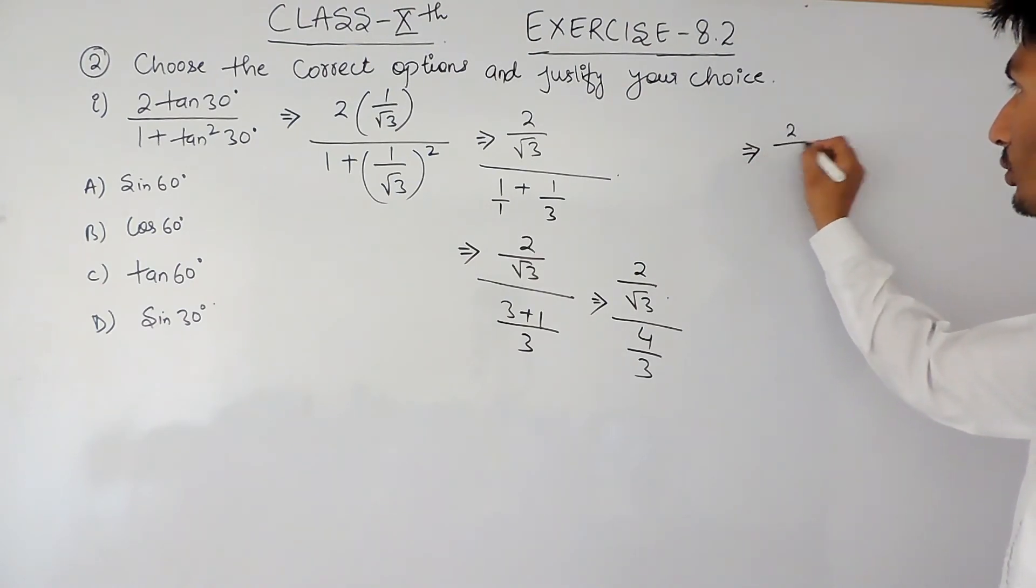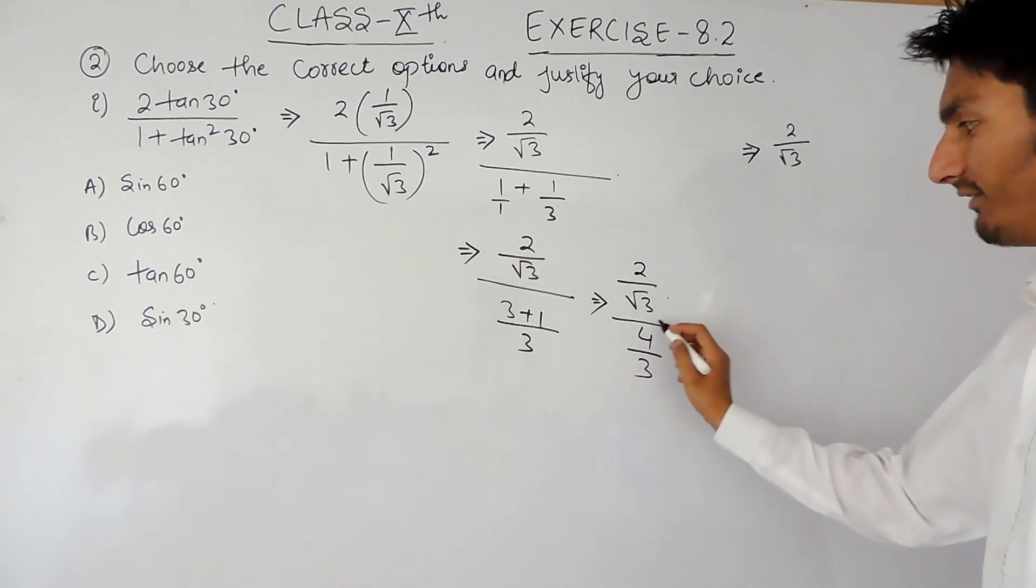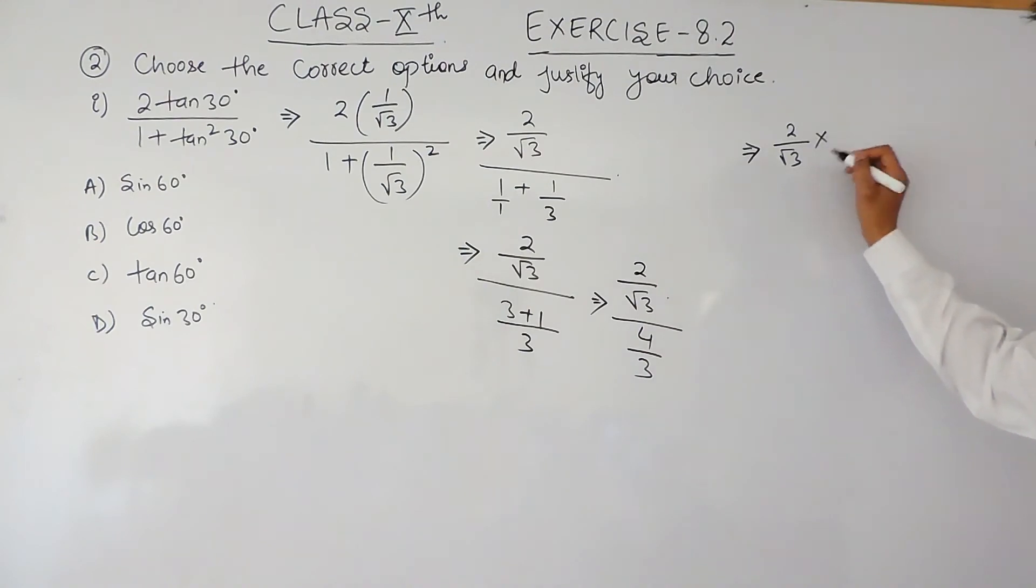Solving this expression further, it will be (2/√3) divided by (4/3). When this fraction is shifted, it becomes reciprocal. So 2 can be cancelled twice, giving us 3/(2√3).